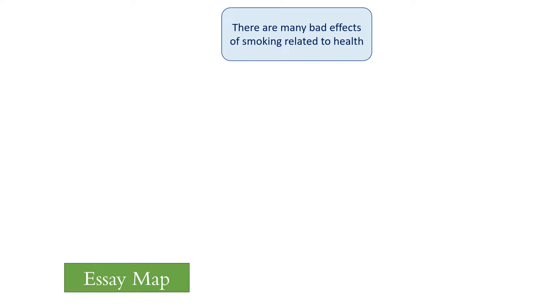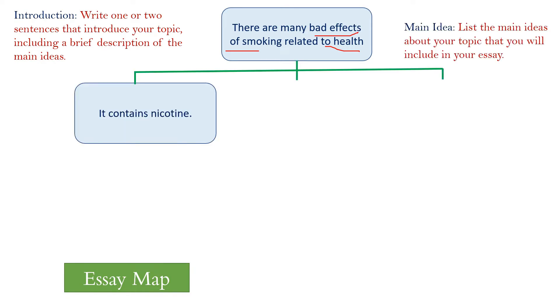For example, I am going to write an essay about the bad effects of smoking on health. So this is my controlling sentence: There are many bad effects of smoking related to health. And then I am going to have three main ideas.